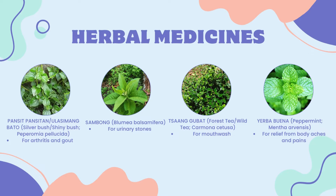Pansit-pansitan, also known as ulasimang bato or shiny bush, is for arthritis and gout. Sambong, or Blumea balsamifera, is for urinary stones. Tsaang gubat, or forest tree, is used as a mouthwash. And yerbabuena, or peppermint, provides relief from body aches and other pains.